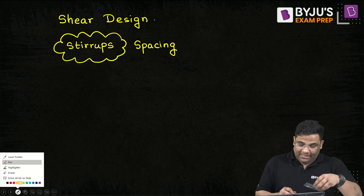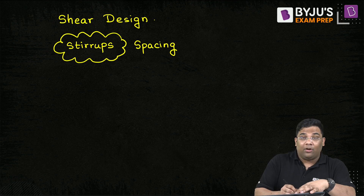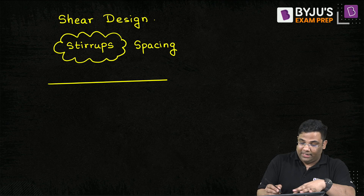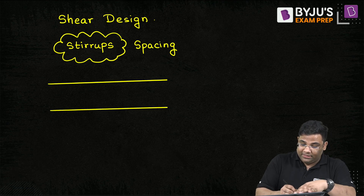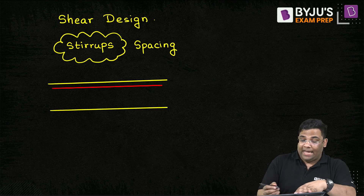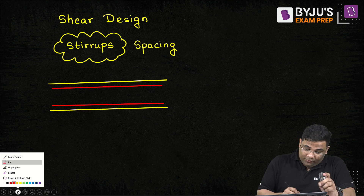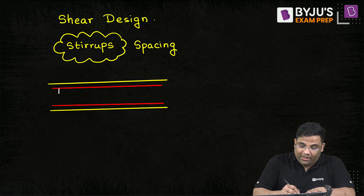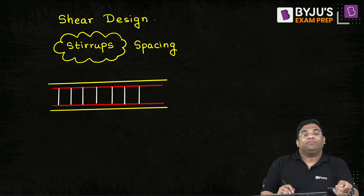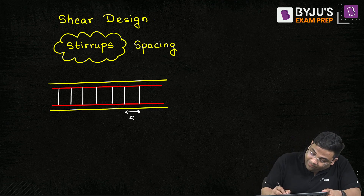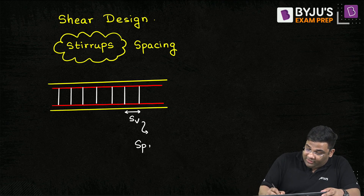Suppose this is a beam drawn lengthwise. There will be longitudinal reinforcement: at the top there will be either compression steel or hanger bars, and at the bottom there will be tension steel. Then I am going to provide stirrups — also known as transverse steel — because they are provided in the transverse or lateral direction. The spacing of stirrups is our subject of interest for this class.